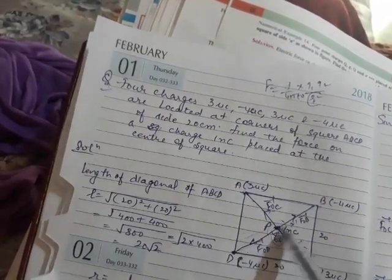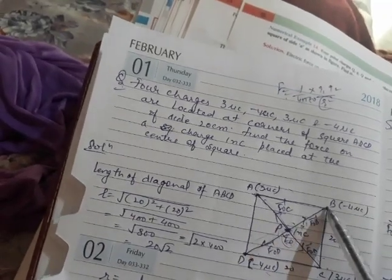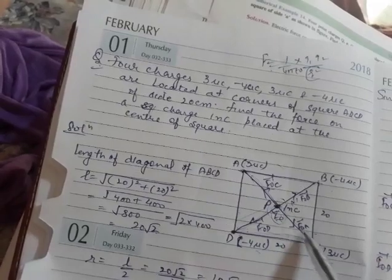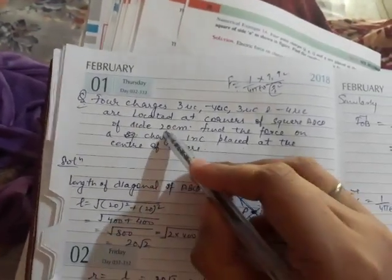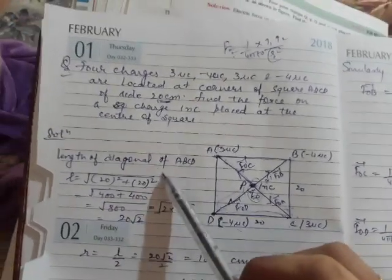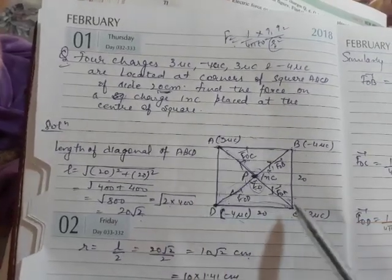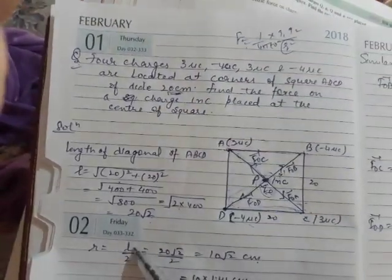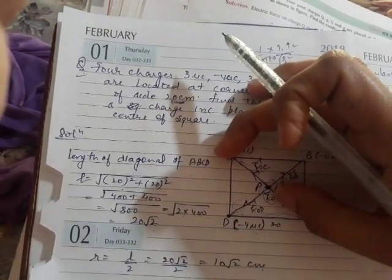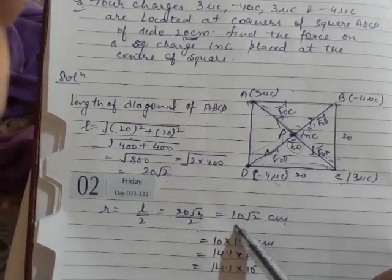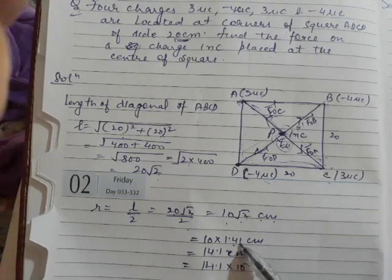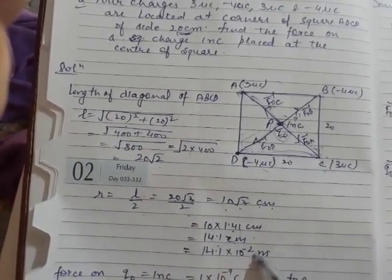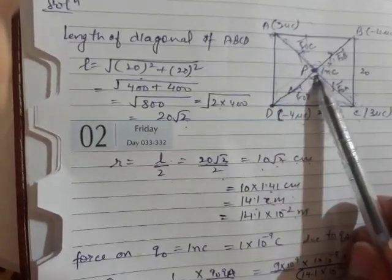The charge Q naught at the center is equidistant from all four corners A, B, C, and D. To find this distance, apply Pythagoras to the diagonal. The side is given as 20 centimeters, so the diagonal AC = √(20² + 20²) = 20√2 cm. The distance from center to corner is half the diagonal: r = 10√2 = 14.1 cm = 14.1×10⁻² meters.